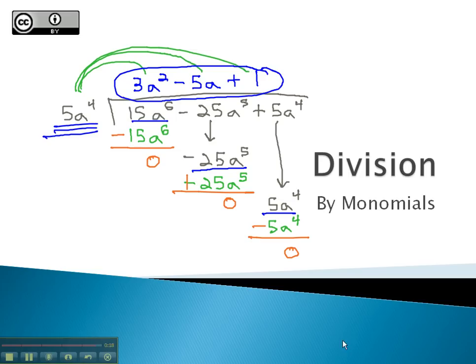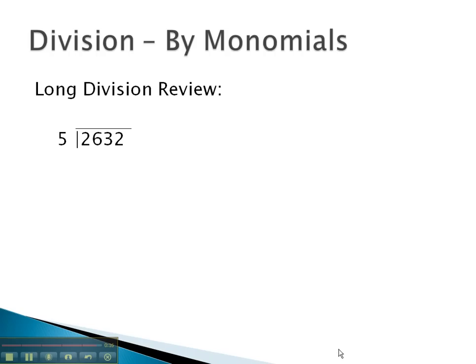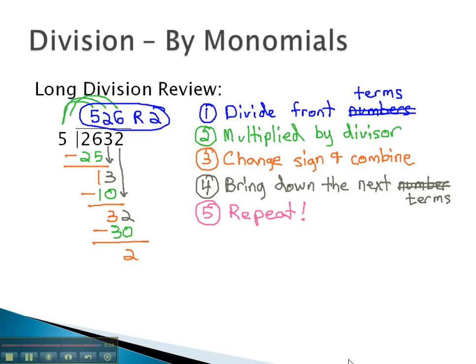Doing long division with polynomials is very similar to how we did long division with numbers. Divide the front terms, multiply by the divisor, change the sign, bring down the next term, and repeat.